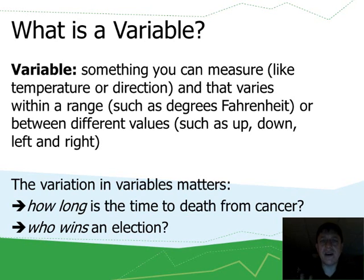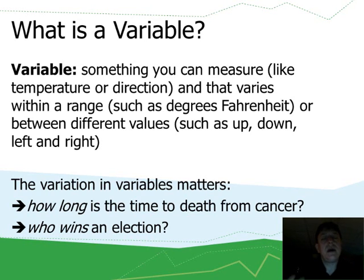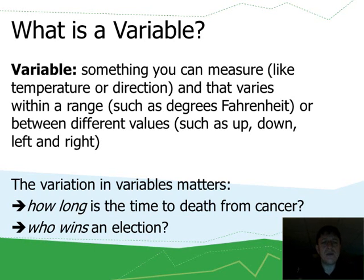Let's start with the idea of a variable. What is a variable? A variable is simply something that you can measure that varies — that's all a variable is. It could be something like temperature that goes up and down in degrees Fahrenheit or Celsius. It could be something like direction that has different values that might not have numbers associated with them, but that are different nonetheless, like up versus down, left versus right.